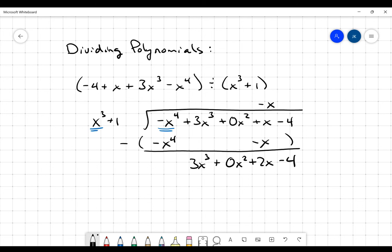And then the pattern starts again. So now the leading term is this 3x cubed. And I'm still using the x cubed for my divisor. So what do I have to multiply by my divisor to get that? The answer is going to be positive 3. And when I do that, I'm going to get 3x cubed. And then 3 times 1 is going to be 3.